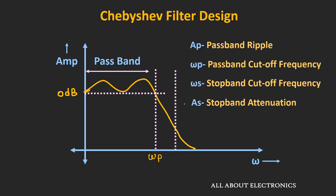The stopband attenuation defines the minimum amount of attenuation in the stopband. For example, if the stopband cutoff frequency is ωs and the minimum attenuation provided is 60 dB, then these two parameters define that beyond ωs you will get at least 60 dB of attenuation. This region is known as the stopband of the filter.